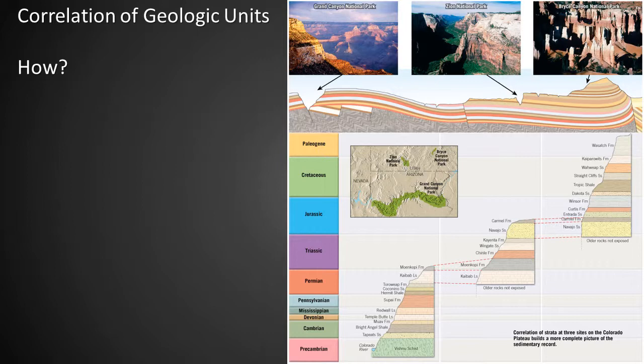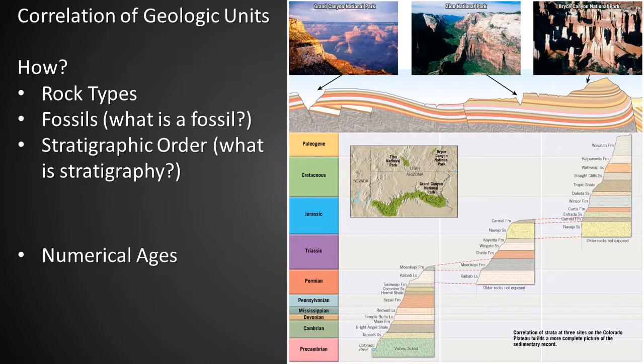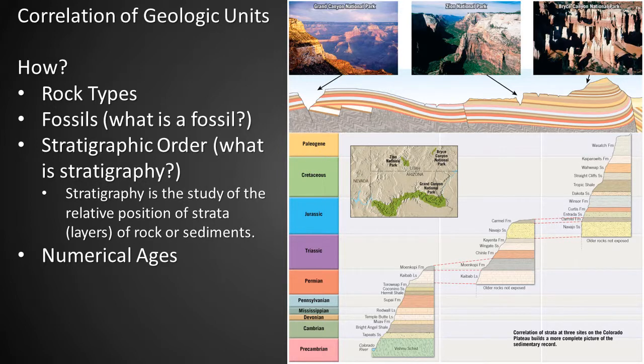Geologists seek to understand the geologic history of a region by looking at the time history of rocks in that region. One important aspect is to correlate geologic units across a region by matching the rocks in one area with the rocks in another. This can be done by looking at the rock types, the fossils embedded within those rocks, the stratigraphic order of the rocks, and the numerical ages of the rocks. In this textbook example, there are three locations in the western USA that are hundreds of kilometers apart, and the cross section shows how the geologic units span this entire region.